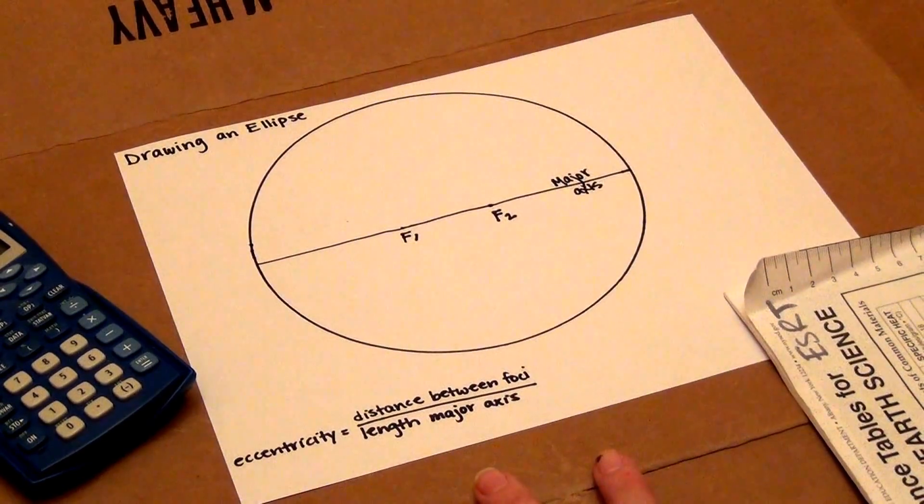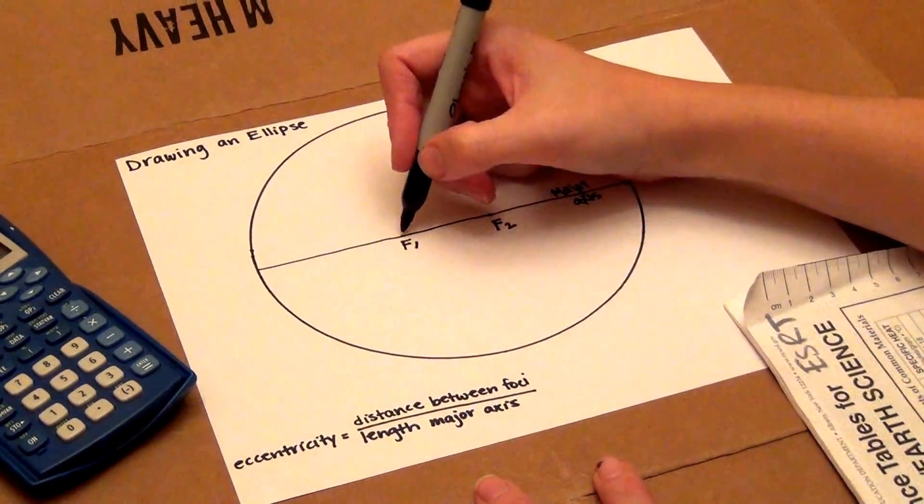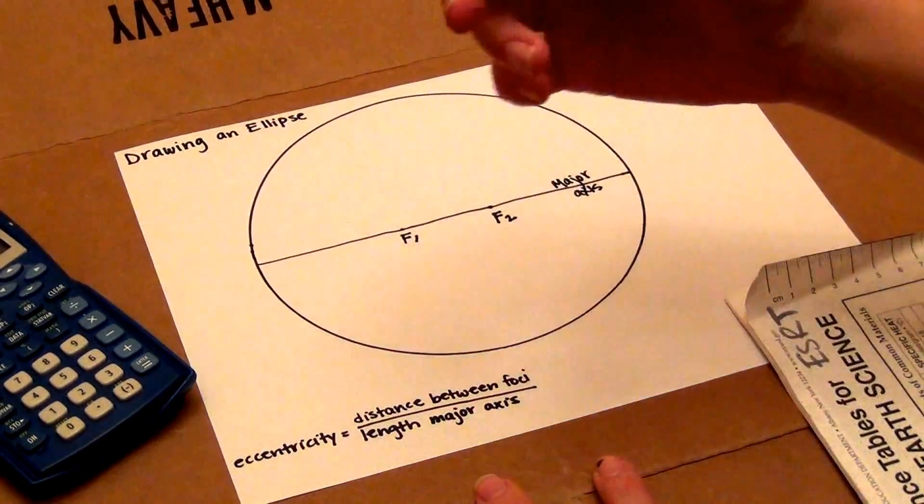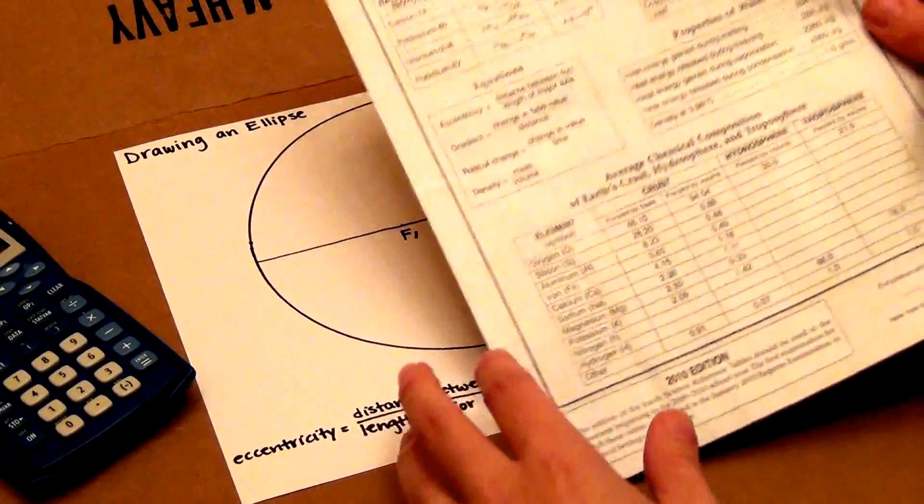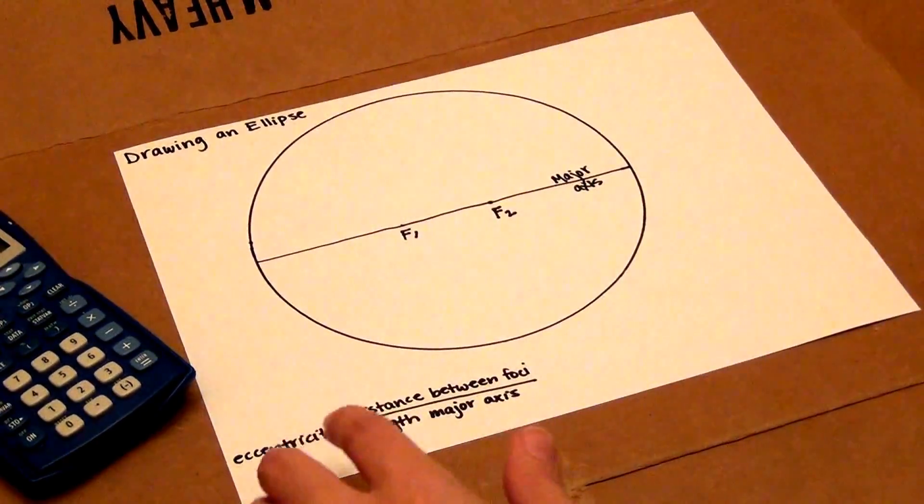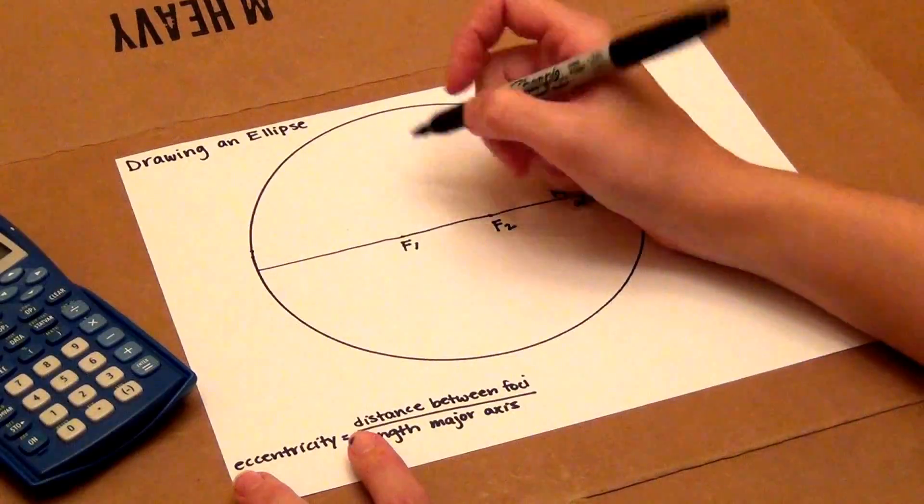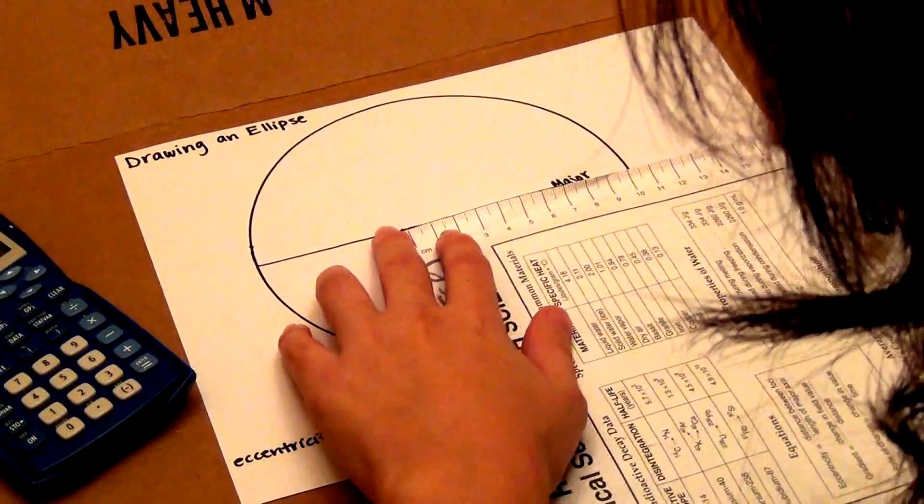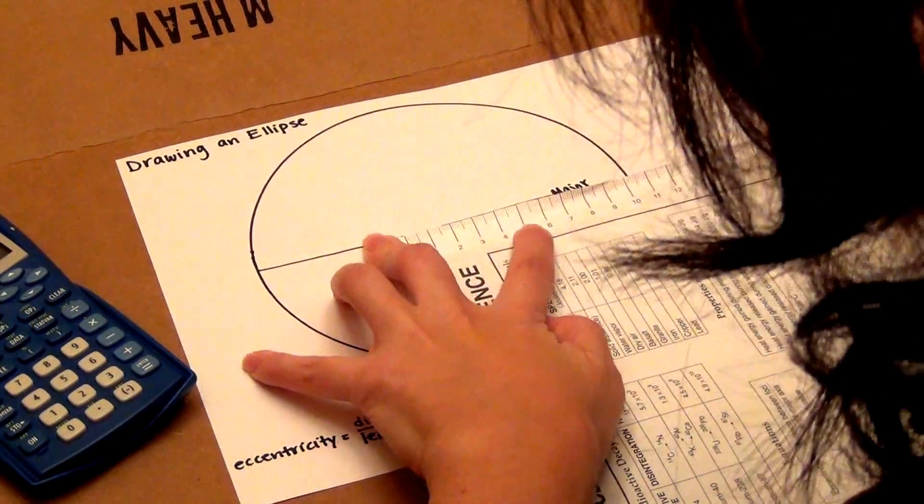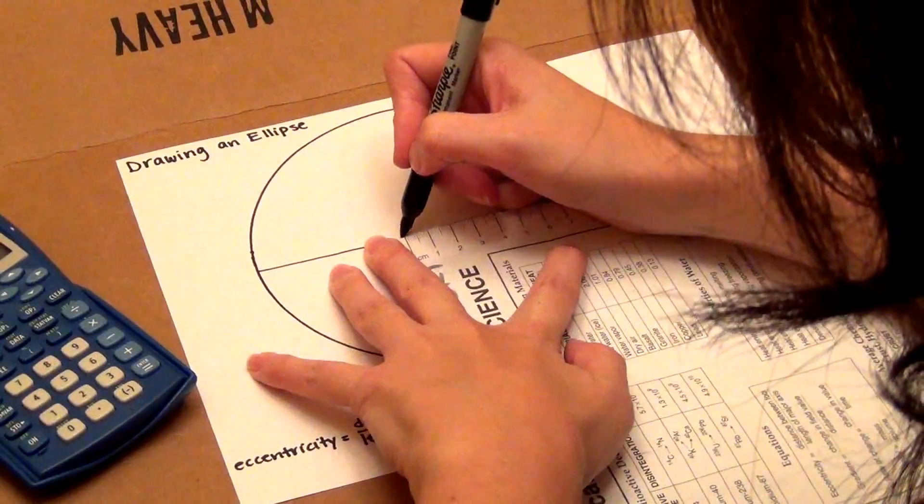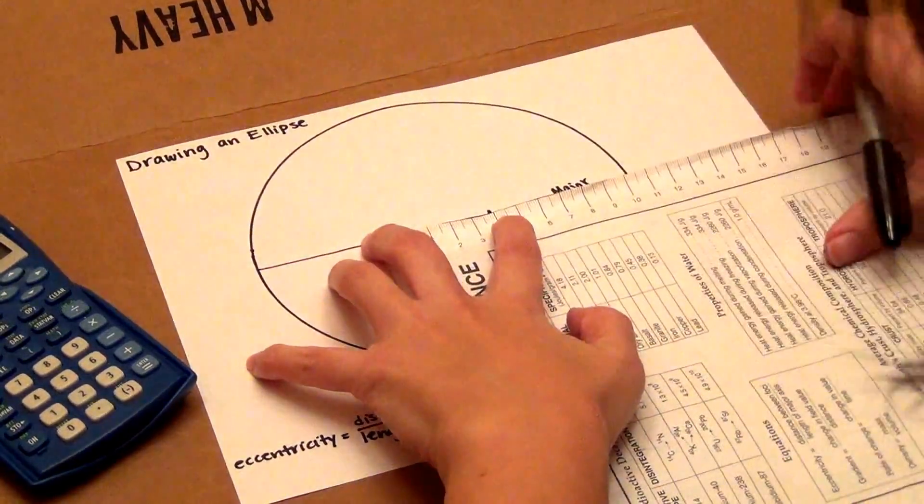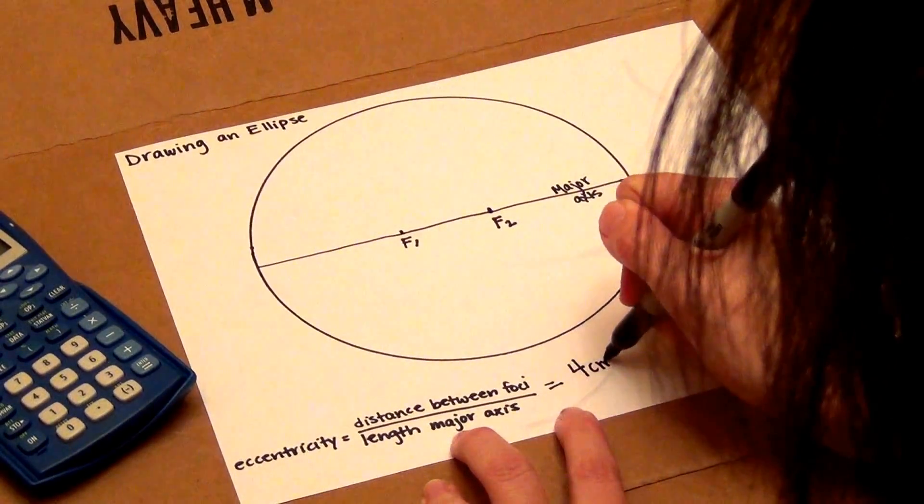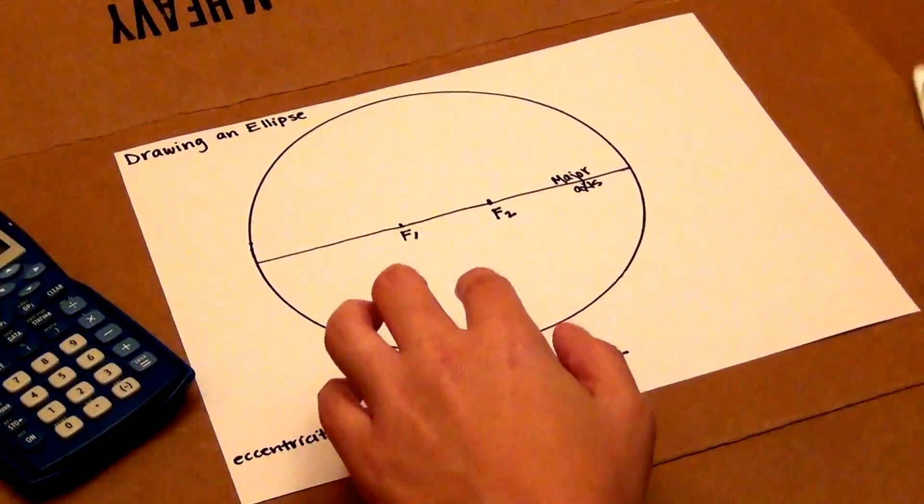If I want to calculate the eccentricity of this ellipse, I need to know the distance between the foci over the length of the major axis. This equation is right here but is also available on the front of the reference table. I know that the distance between the foci was 4 cm because that's what I started with, but just to be sure, I'll check. So 4 cm is my distance between the foci, here's one foci and here's the other. So the eccentricity of this ellipse is 4 cm over the length of the major axis.